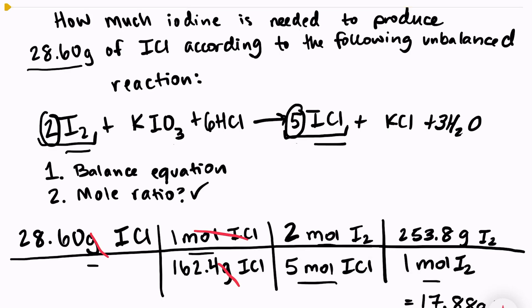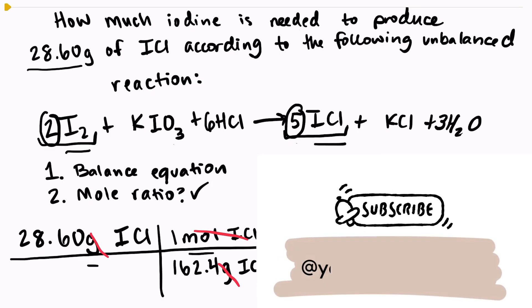Grams, moles of ICL, moles of I2, and we're left with grams of I2, which is exactly what we wanted. So as long as you're staying organized, stoichiometric problems can be very simple. I hope this video helped. Let me know if you have any further questions, and check out any other videos if you have questions regarding any other topics. Thank you for stopping by.